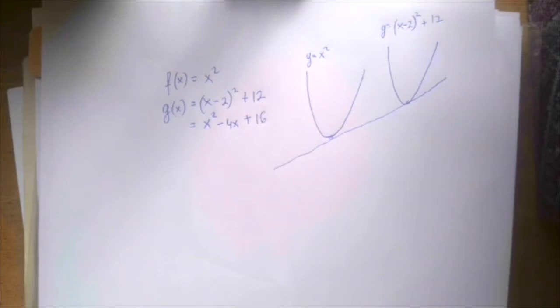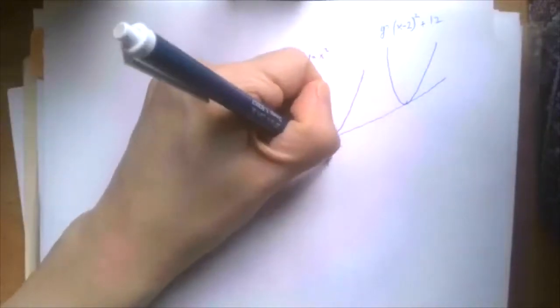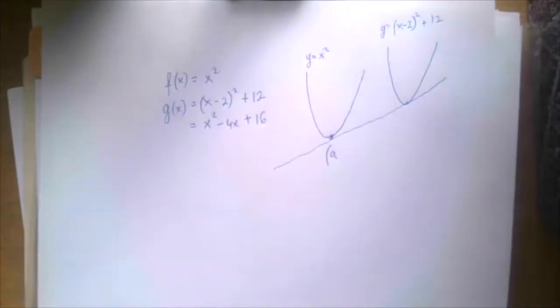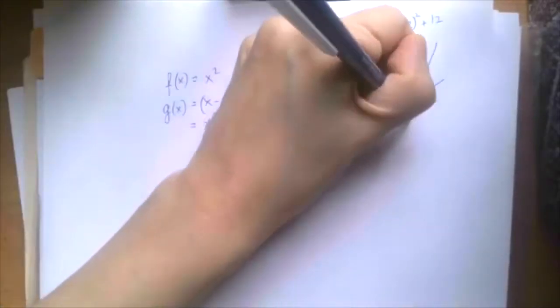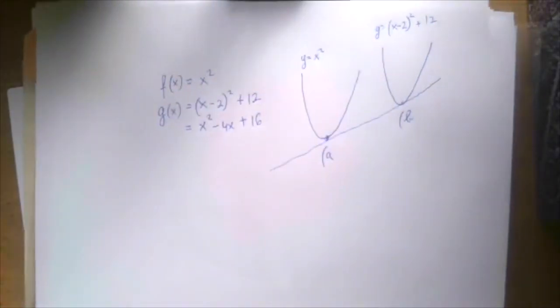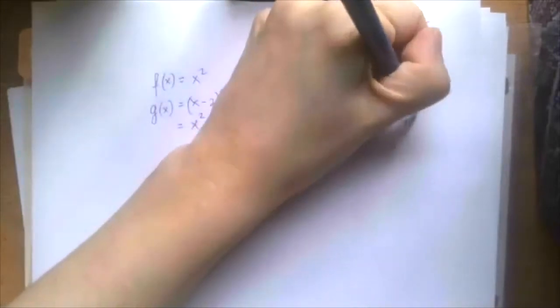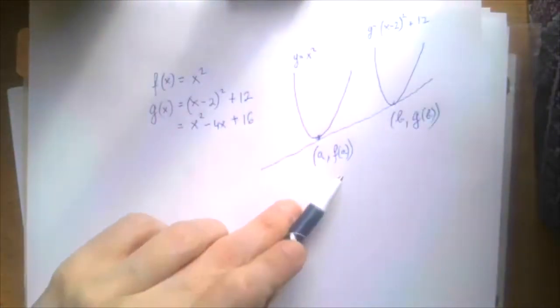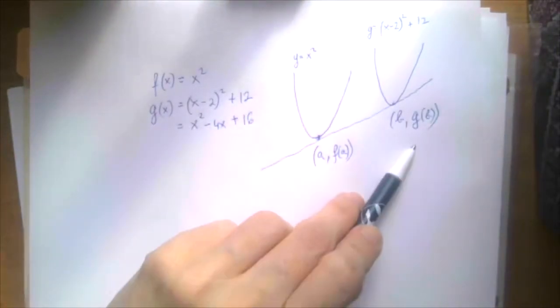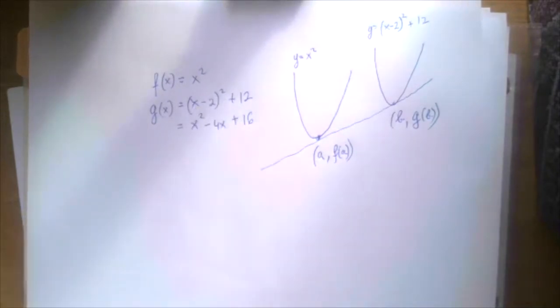And so if we want to apply the derivative, we should say that the derivative should be the slope of the tangent line at that point. So we should introduce the x coordinate of the first point of tangency to be A and x coordinate of the second point of tangency to be called B. The y coordinates are then f of A and g of B. f of A is A squared and g of B is B minus 2 squared plus 12.